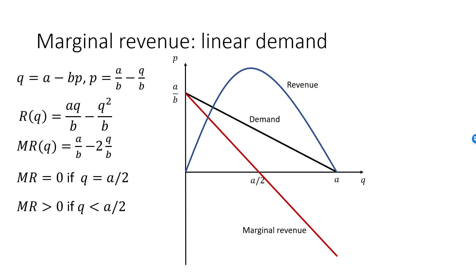When Q is less than A over 2, the marginal revenue is strictly positive, and at these quantities demand is elastic. Finally, the marginal revenue is strictly less than zero when Q is greater than A over 2, and here the absolute value of epsilon is strictly less than 1 and demand is inelastic. Marginal revenue is positive in the rubber band region and negative in the stiff region.